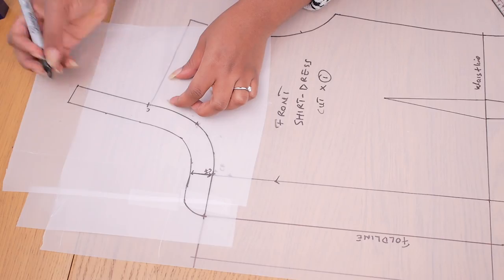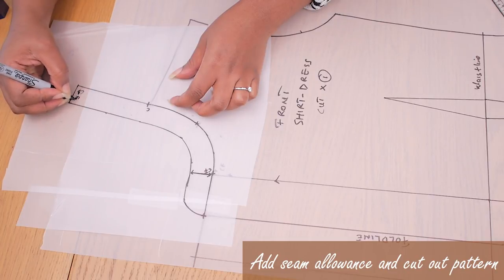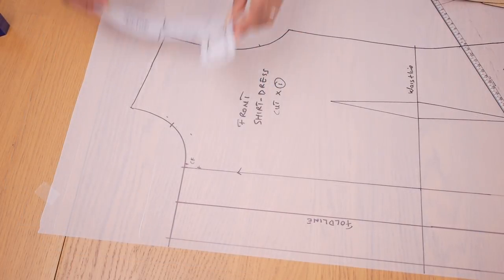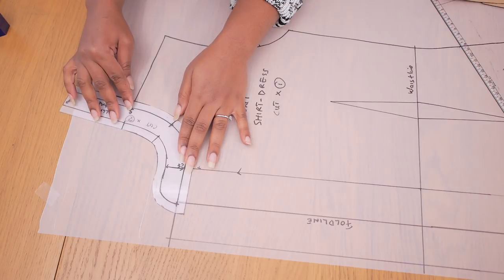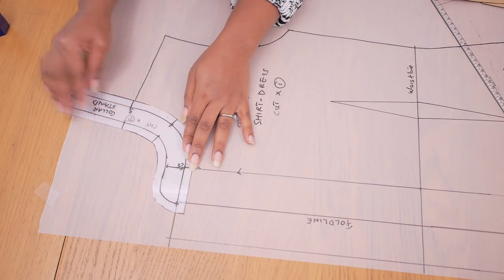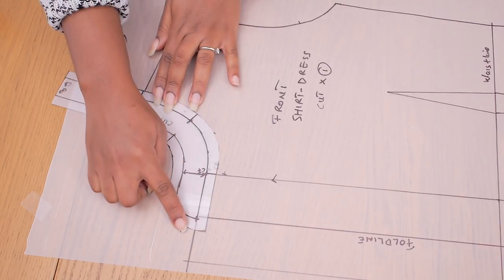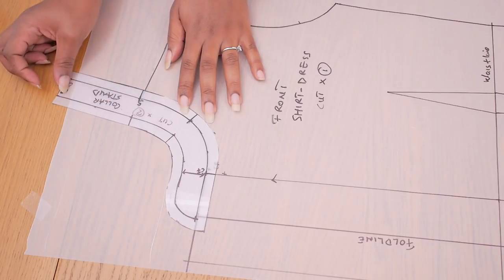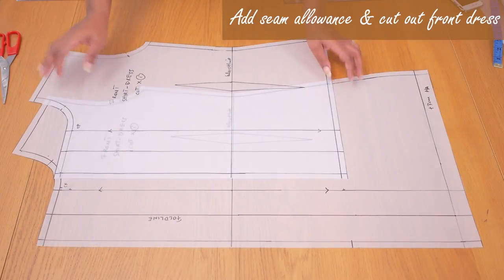So this is going to become your collar stand. You need to cut that center back on the fold so you have one piece that wraps around the neckline of your shirt. So you just go ahead and add your one centimeter or however much seam allowance that you like to work with all the way around except that center back point that side has to be cut in the fold. So you would need to cut two of these which is a pair and then when you join them together you have your collar stand that sits on your shirt.